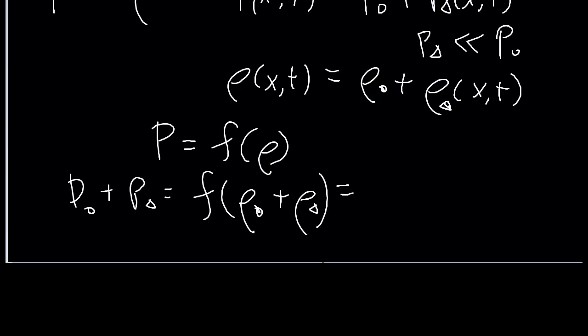So breaking this down into the average and change component, we have P_0 plus P_delta is equal to some function of rho_0 plus rho_delta. As the delta is small, we can use Taylor series expansion or linear approximation. So this is going to be whatever the function evaluates to at the average density plus a little change in our density times the derivative of the function at rho zero.